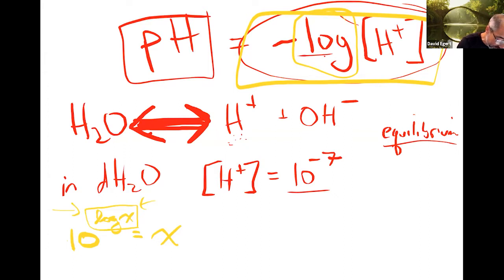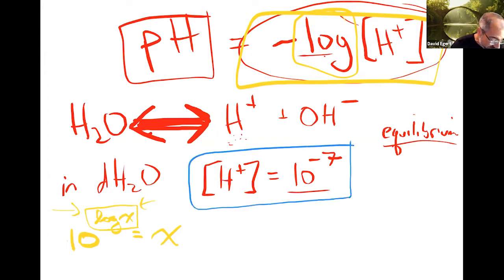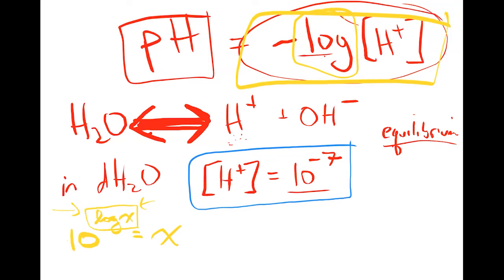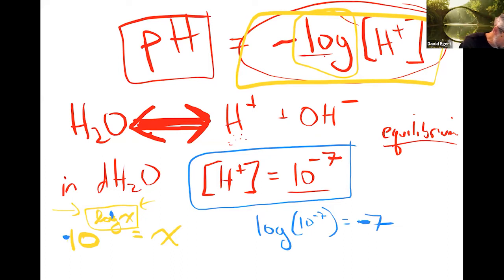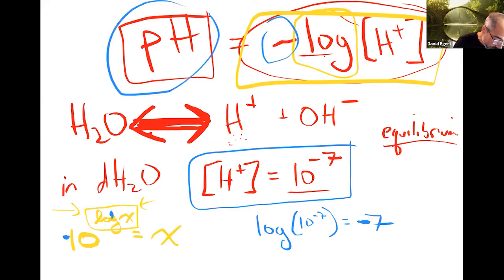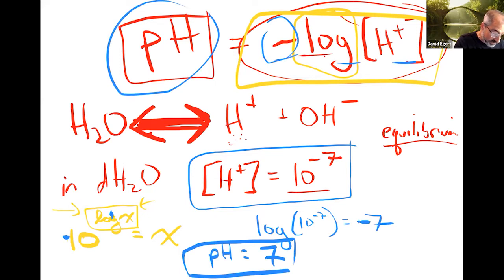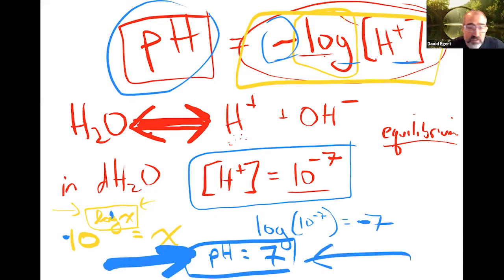So what is the log of 10 to the minus seventh? What power do you have to raise 10 to? Negative seven — exactly. So the log of 10 to the minus seventh is just negative seven. Then pH — we change the sign — so pH is going to be seven. That's why we talk about neutral water having a pH of seven.